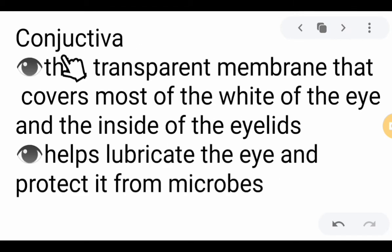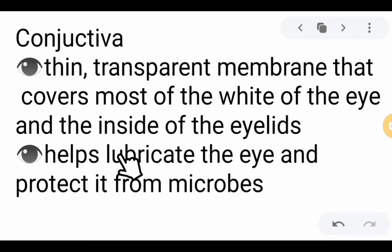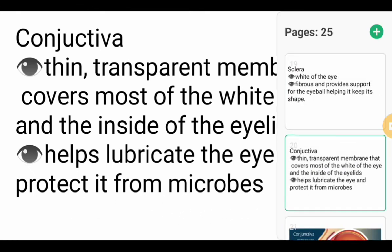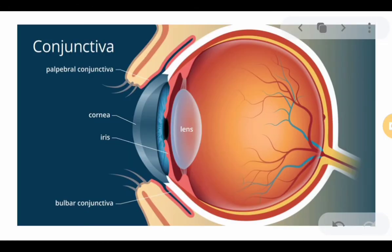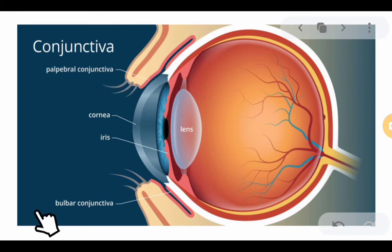Next, we have the conjunctiva. It is a thin, transparent membrane that covers most of the white of the eye and the inside of the eyelids. It helps lubricate the eye and protect it from microbes. There are two types: the palpebral conjunctiva, located in the upper part, and the bulbar conjunctiva. Both support and protect the white part of the eye and the insides of the eyelids.